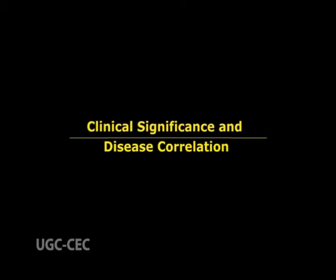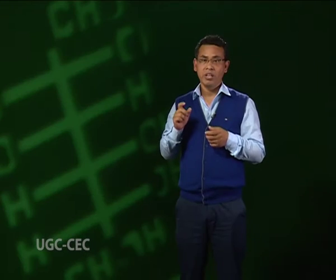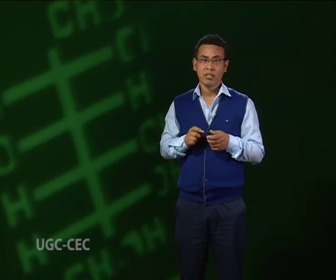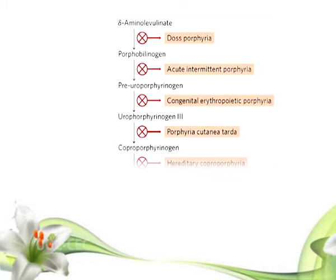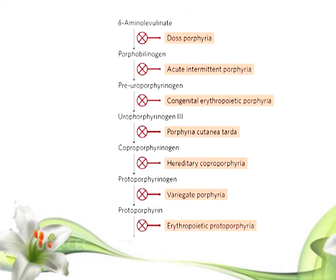Clinical Significance and Disease Correlation. The porphyrias are inherited or acquired enzyme deficiencies that result in overproduction of heme precursors in the bone marrow — erythropoietic porphyrias — or the liver — hepatic porphyrias. Disease states corresponding to enzyme deficiencies have been identified at every step of heme synthesis. The porphyrias include: ALA dehydratase deficiency porphyria, acute intermittent porphyria, congenital erythropoietic porphyria, porphyria cutanea tarda, hereditary coproporphyria, variegate porphyria, and erythropoietic protoporphyria. Some patients demonstrate an enzyme deficiency but do not show clinical manifestations, indicating that other factors such as increased demand for heme biosynthesis also contribute to disease expression.